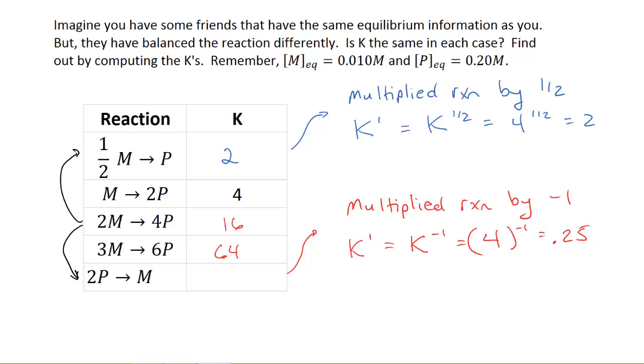Hopefully you've seen that in this first reaction at the top, you've multiplied our initial reaction by one half. So since we've done that by one half, we need to raise our equilibrium constant, which was 4, to the one half power. One half power is the square root, and we get 2. If you plug in the numbers directly, you'll get that as well.